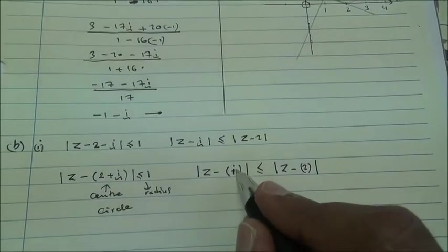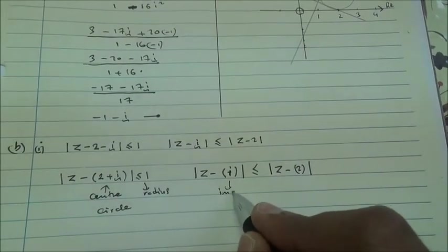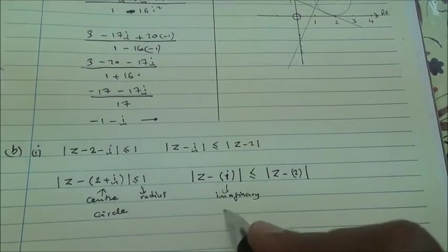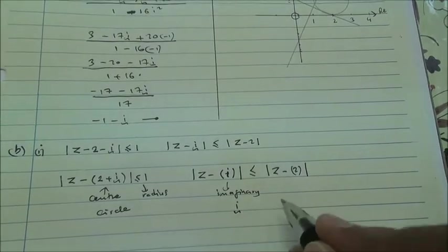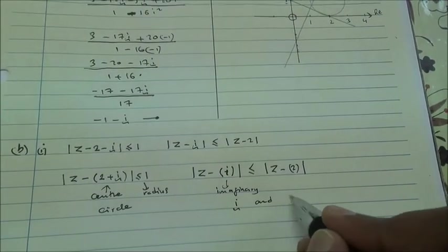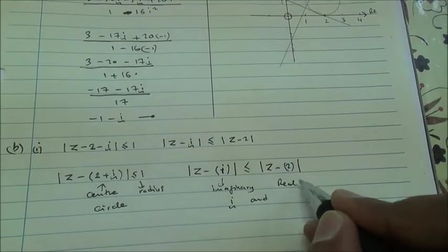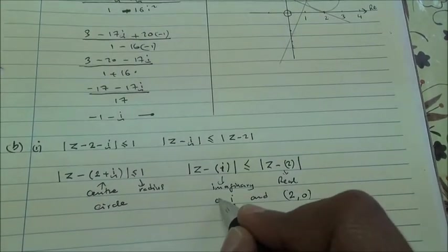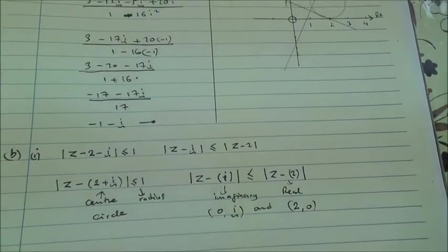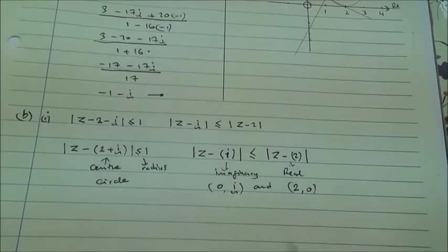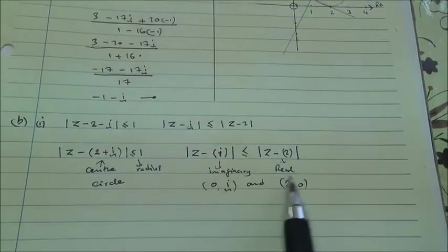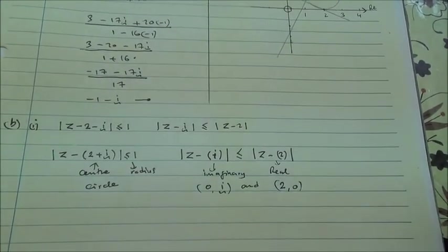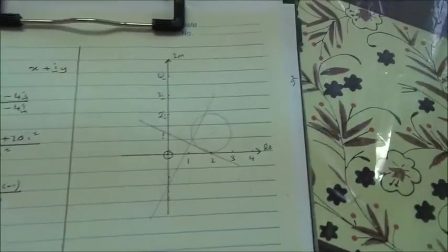So, on the imaginary axis, we're gonna have positive i. And then, on the real axis, we're gonna have two. That is the coordinates 2, 0. Maybe we can say zero i. What would be the locus of the points here? It's gonna be the bisector of these two points.